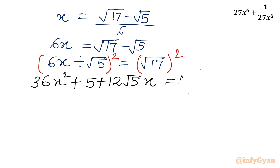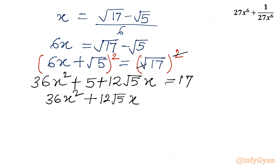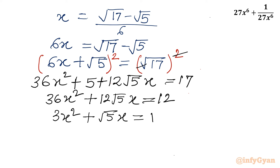On the right hand side I will be writing 17 only as we cancel the square root with power 2. Now I can write 36x² + 12·root 5·x, and 17 minus 5 is 12. The equation is divisible by 12, so I can write 3x² + root 5·x = 1. Now I will move 3x² to the right: 1 minus 3x² equals root 5 times x.